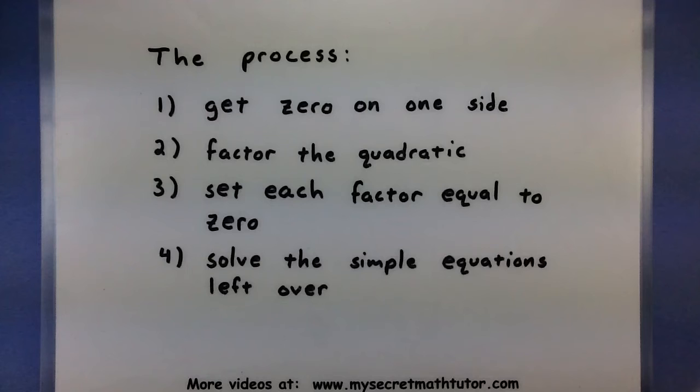So the first thing that we want to do is get 0 on one side of our equal sign. Then we'll go ahead and factor the quadratic that's on the other side. Once we have each of its factors, we'll set each of those equal to 0. Now what this will create is two simpler equations that we'll simply solve from there on out. The reason why these will be much simpler than our original equation is each factor will be linear so there won't be any more squareds. We'll just solve them directly.